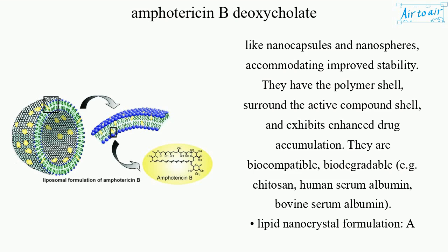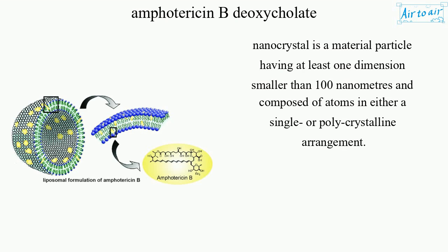Polymeric nanoparticles are biocompatible and biodegradable — examples include chitosan, human serum albumin, and bovine serum albumin. Lipid nanocrystal formulations: a nanocrystal is a material particle having at least one dimension smaller than 100 nanometers, composed of atoms in either a single or polycrystalline arrangement.